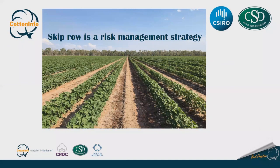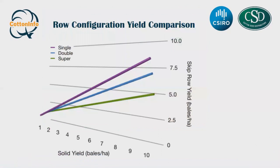Skip row is very much a risk management strategy - we're reducing the impacts of very dry or limited water situations. When we grow a skip row, the crop tends not to be as stressed and doesn't throw as much fruit, managing that downside risk. Some configurations are close to solid row yields. This graph shows they come together at the low yield end, and at the high yielding end a skip row will never equal solid because plants aren't there - but a single skip configuration starts to get close.